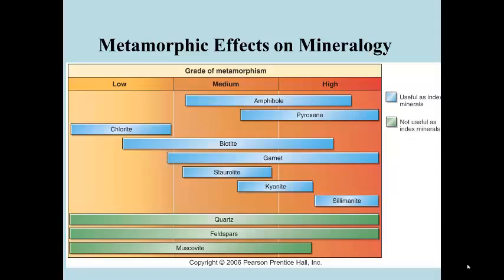Metamorphism, heat and pressure, also affects the minerals that are present. If we look at low, medium, and high-grade metamorphism, we find that certain minerals are stable for low-grade metamorphism. Others are stable across a wide range. For example, the mineral quartz is stable basically all the way up to the point it melts. Feldspars are present throughout the whole metamorphic range. But the mineral chlorite is only found in low-grade metamorphic rocks.